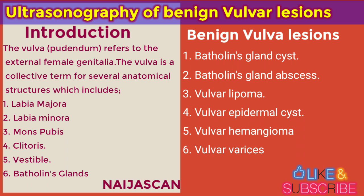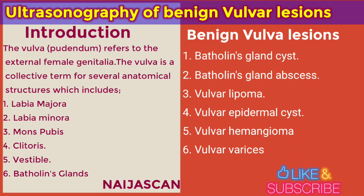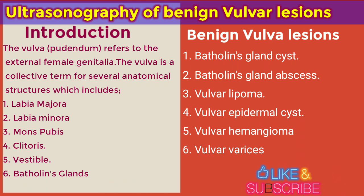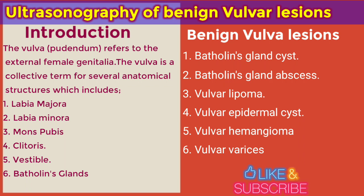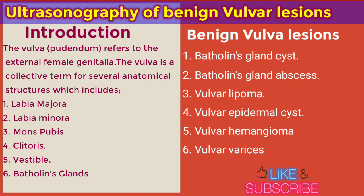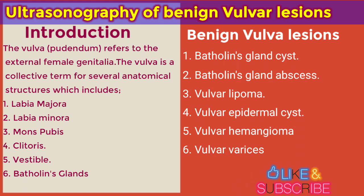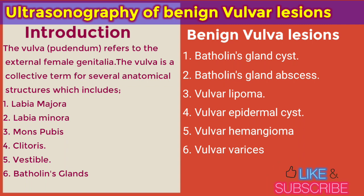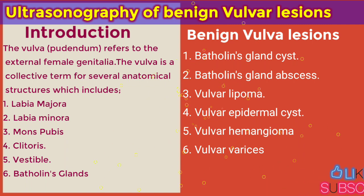The vulva is a collective term for several anatomical structures, which includes the labia majora, labia minora, the mons pubis, the clitoris, the vestibule, and the Bartholin's glands. We'll look at some benign vulva lesions and their sonographic features.